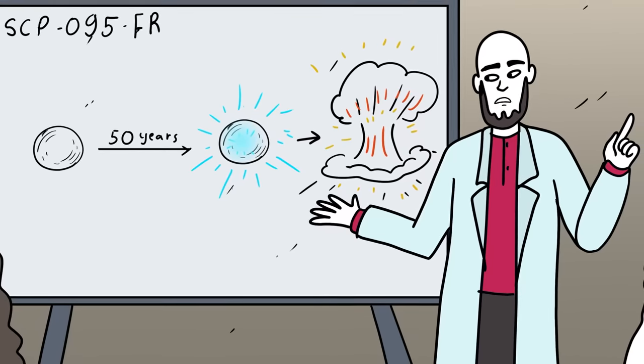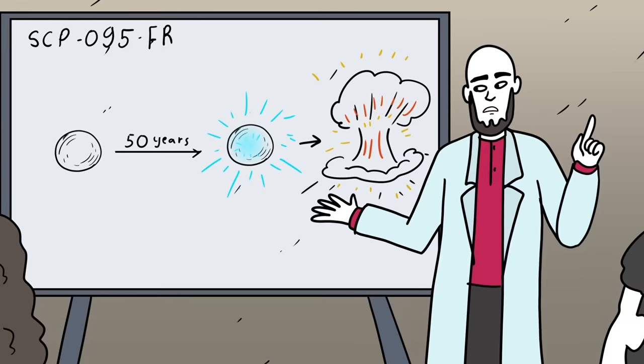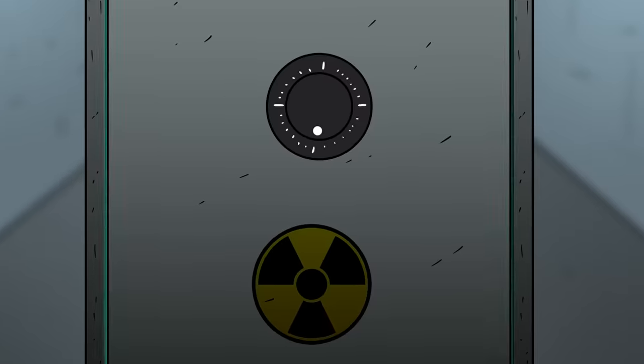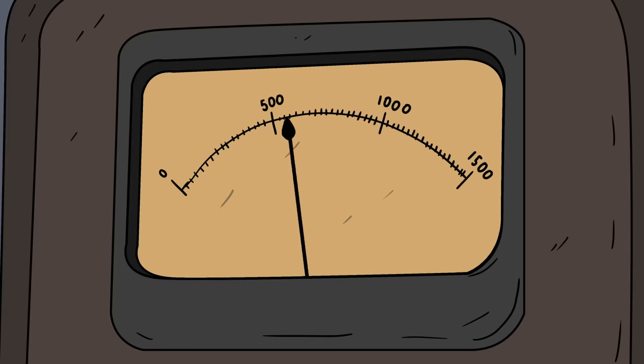Foundation researchers studying the Demon Core determined that it was likely to explode again in roughly fifty years, and that the only discernible difference measured in the core before it suddenly went supercritical and destroyed the Foundation site was a sudden spike in radiation.